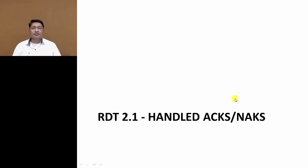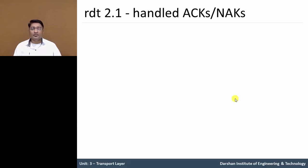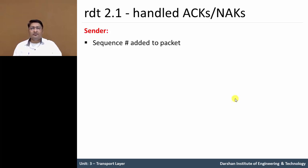In this video we will discuss the RDT protocol version 2.1. In this version we have handled the acknowledgement and negative acknowledgement packets instead of data packets. In the previous protocol we checked whether a packet is corrupted or not. In this protocol we check whether the acknowledgement or negative acknowledgement is corrupted. On the sender side we need to add a sequence number to the packet.